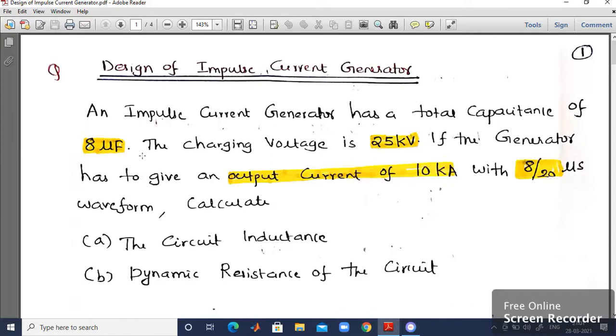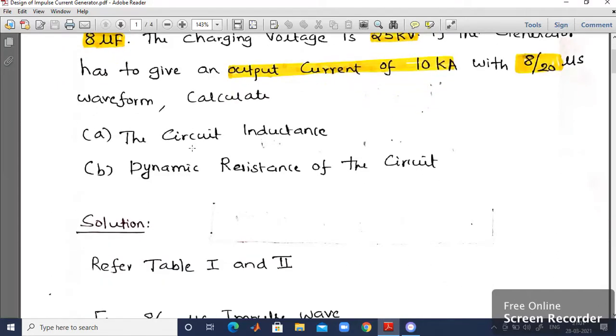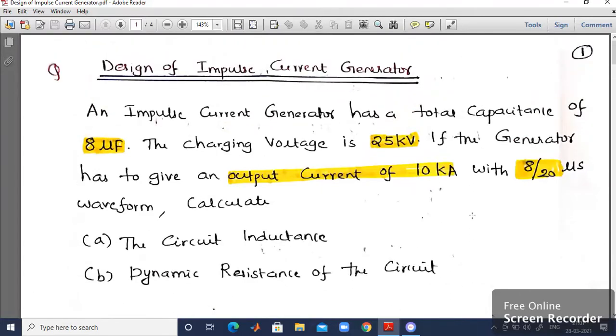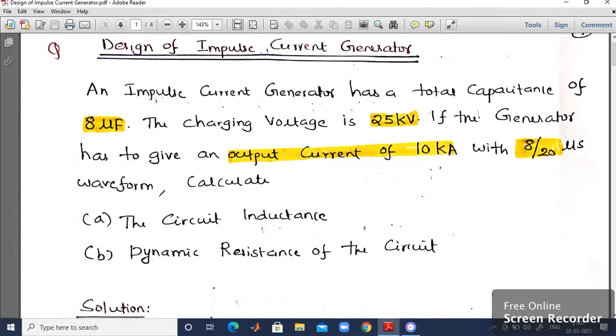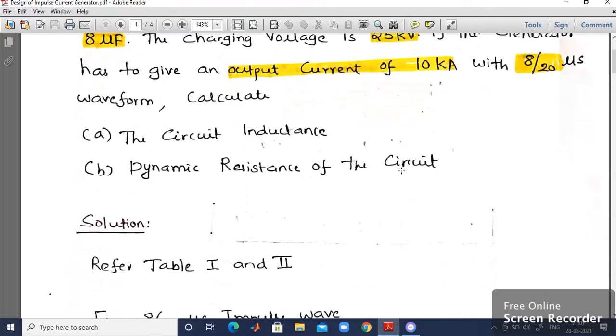First and foremost, I recommend you note down all the parameters which are given from the question itself. We have total capacitance 8µF that you can note down. Similarly, the charging voltage is in the range of 25kV. And also wavefront time that is equal to 8µs where wavetail time is equal to 20µs. Those parameters have to be noted down first.